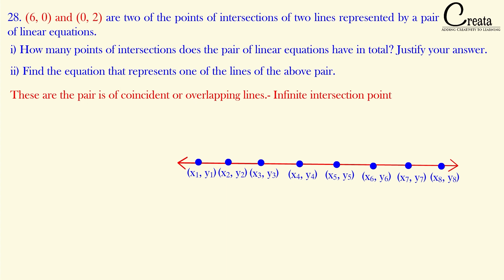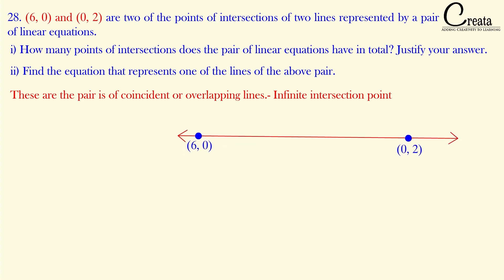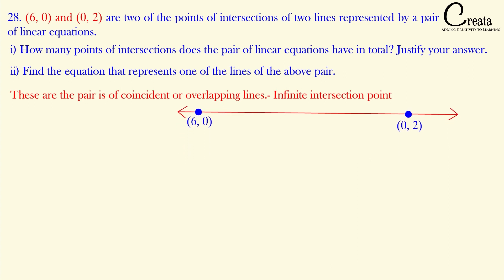The first part is done. For the second part, the question framer is asking us to find the equation that represents one of the lines of the above pair. So basically we have to find the equation of the line which passes through the two points (6, 0) and (0, 2).